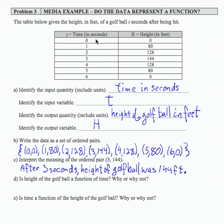So what I'm looking for first is to see if I have any input values repeated. If I don't, then I'm almost assured to have a function. So what I can say here is that yes, height of the golf ball is a function of time. And why? Because each input has one unique output.